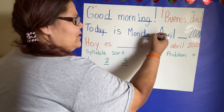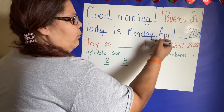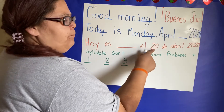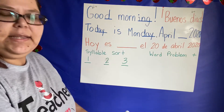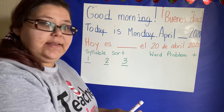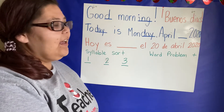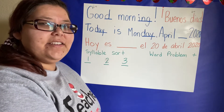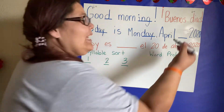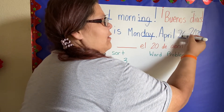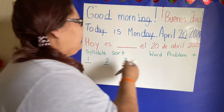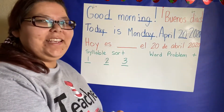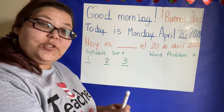D-A-Y. April. In Spanish it says veinte. How do we say veinte en inglés, in English? Twenty. So today is Monday, April 20, 2020. Lots of twenties today.